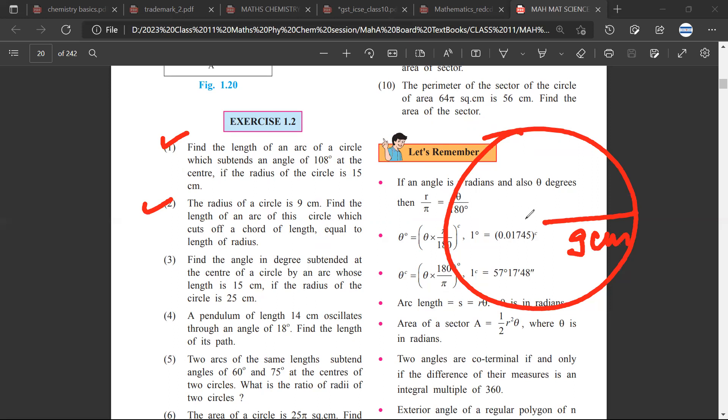For that chord, we want the length. The radius is 9 centimeters, so find the length of the arc which cuts off the chord. Let me assume that this is the chord whose length is 9 centimeters.